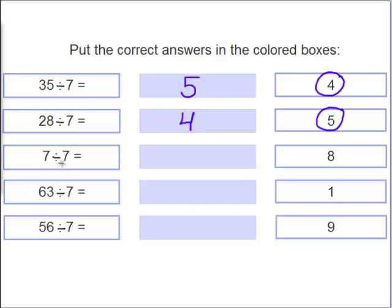7 divided by 7 equals what? Yes, it is 1. 7 divided by 7 equals 1. 63 divided by 7 equals what? Is it 8 or 9? Very good. It's 9.